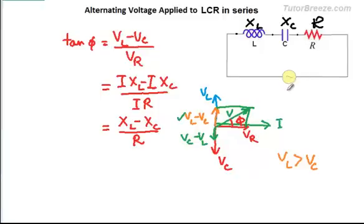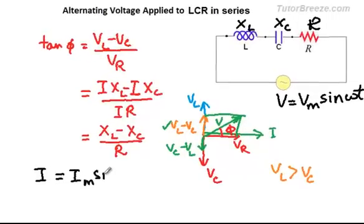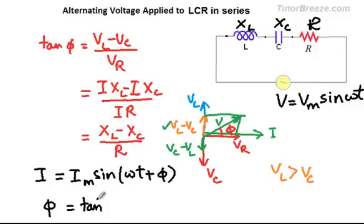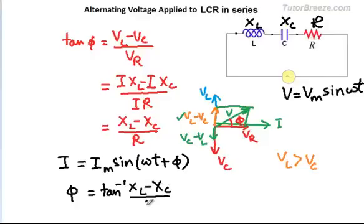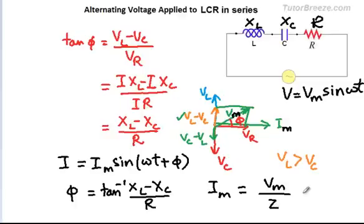In this series LCR circuit driven by V equals Vm sin omega t, the current i can be written as Im sin(omega t plus phi), where phi equals tan inverse of (XL minus XC) over R. The current amplitude Im equals Vm divided by Z, which is Vm over the square root of (XL minus XC) squared plus R squared, where Vm is the voltage amplitude and Im is the current amplitude.